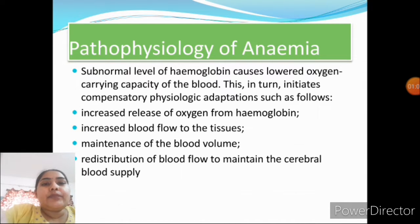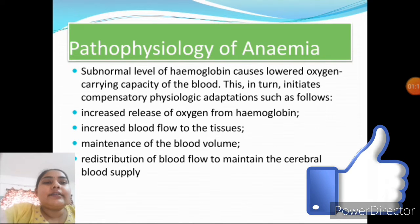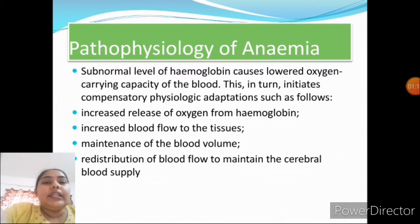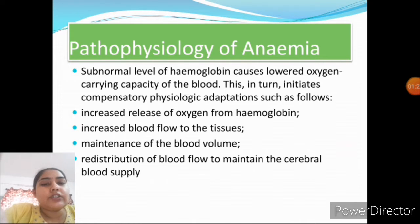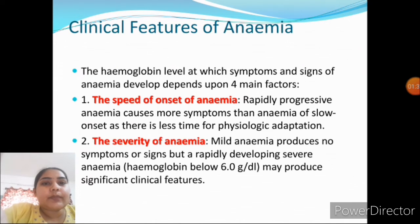Pathophysiology of anemia: subnormal level of Hb causes lowered oxygen-carrying capacity of the blood, which in turn initiates compensatory physiological adaptations such as increased release of oxygen from Hb, increased blood flow to the tissues, maintenance of blood volume, and redistribution of blood flow to maintain the cerebral blood supply.